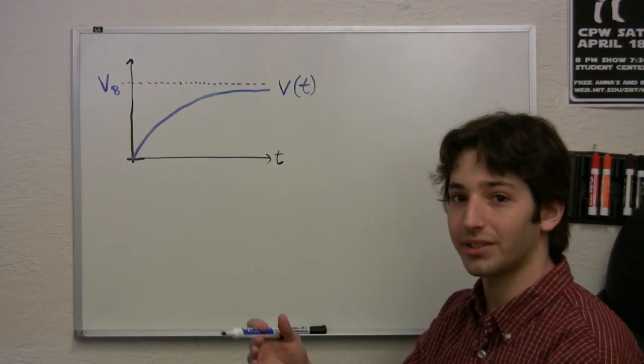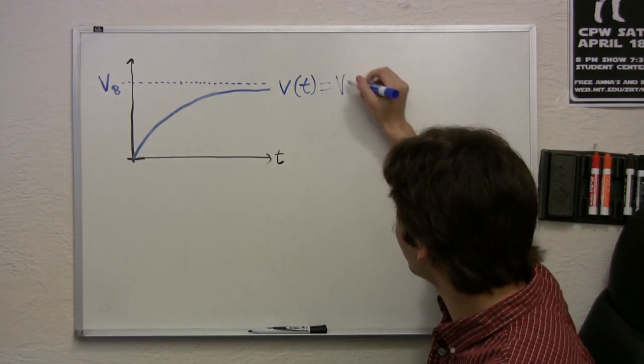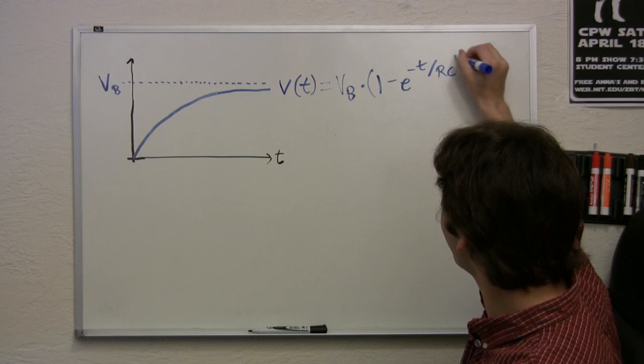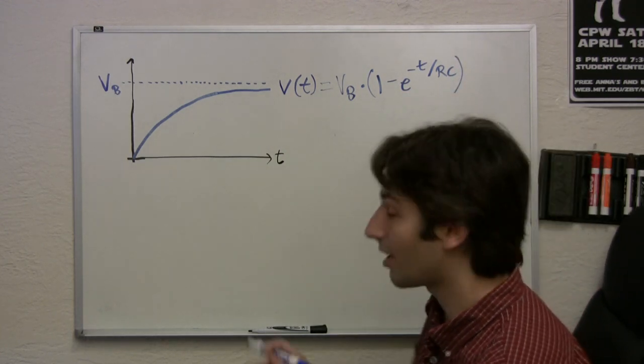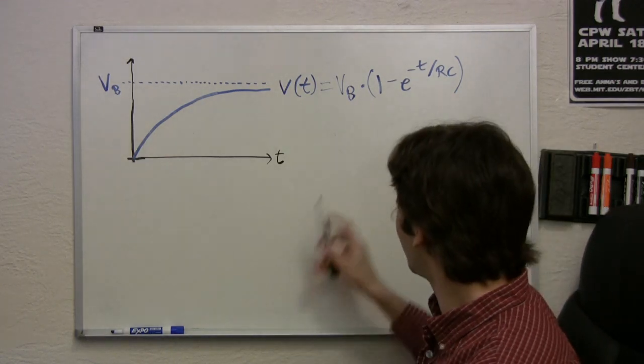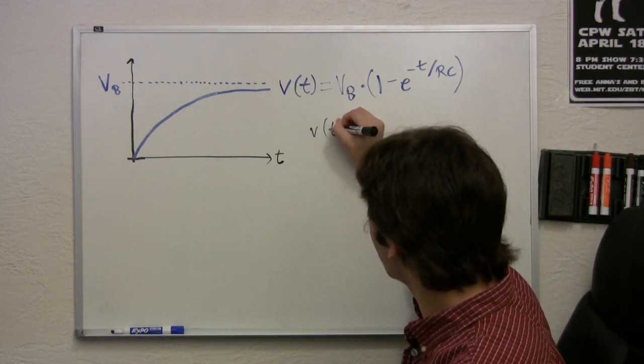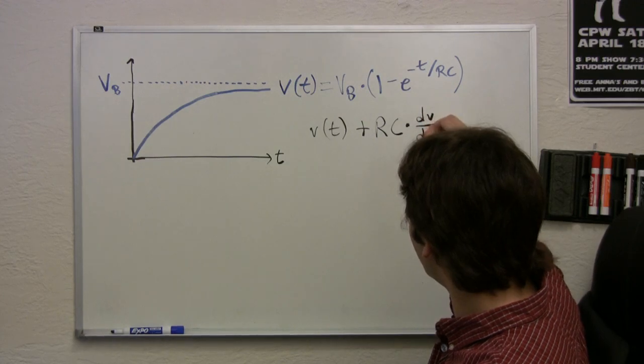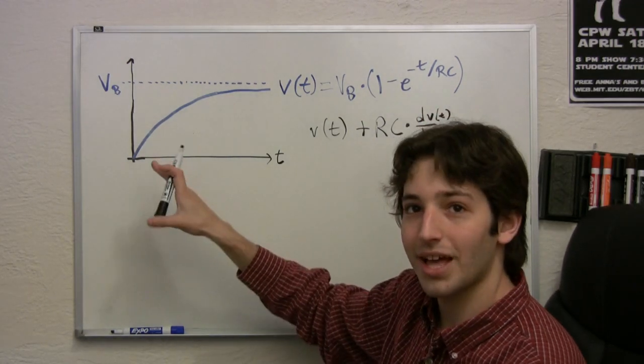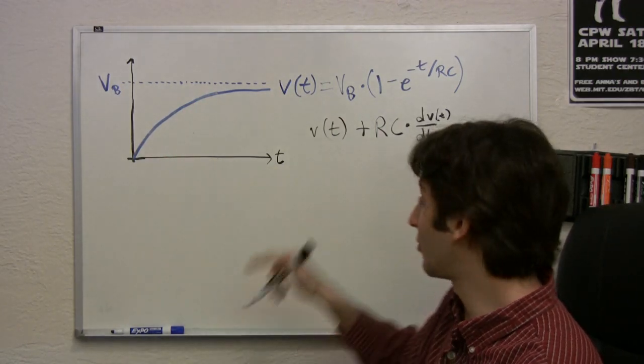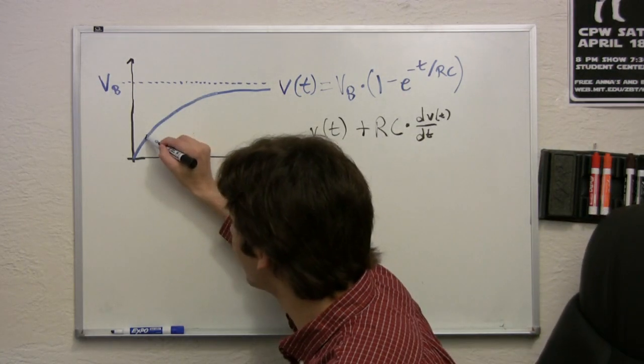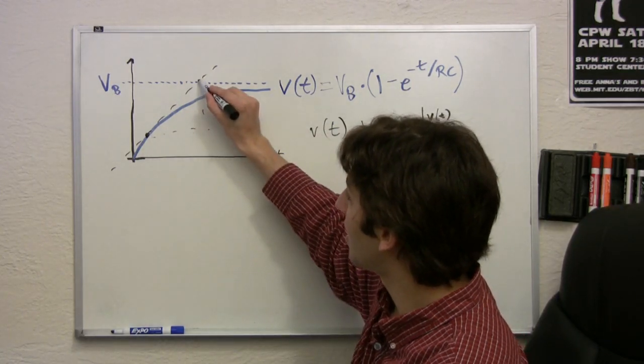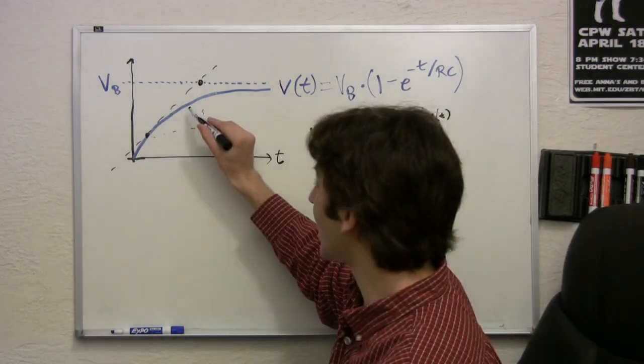If you go through the math or remember back to your physics class, the equation for this curve is VB, the battery voltage, times 1 minus e to the minus T over RC. RC is that time constant. So I want to show you something cool that's kind of special about this equation. If we take V of t and we add in RC times its derivative, dv dt, we can actually use that to predict the eventual value that the curve is going to rise to. So graphically, what this equation means is I can take any point on this curve, draw the tangent line, and if I go forward in time by one time constant, I end up exactly at VB.